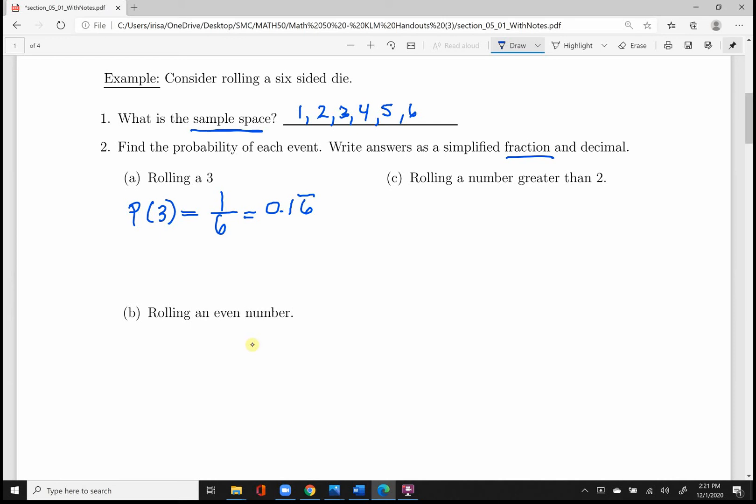Part B, let's say we wanted to find the probability of rolling an even number. Well, we want to list inside of the argument of the probability notation all possible outcomes. And that would be two, four, or six. So how many outcomes do we have? Three. And there were six possible events total. We want to reduce that fraction, right? Because it asks for a simplified fraction. And that would give us one half, which as a decimal would be 0.5.